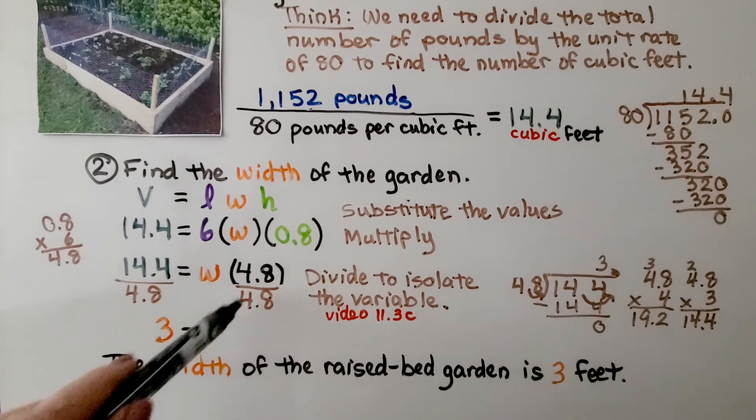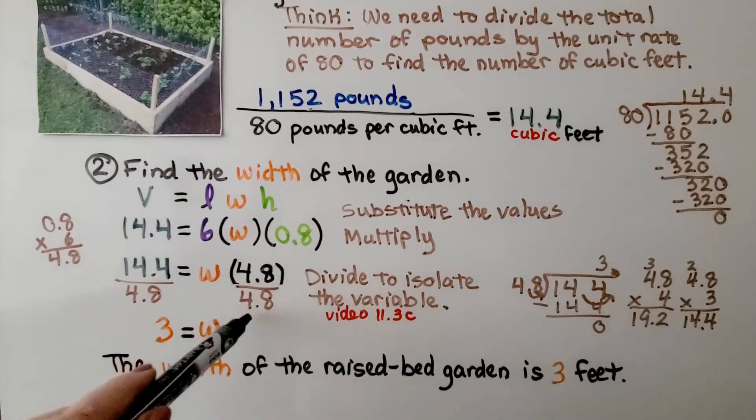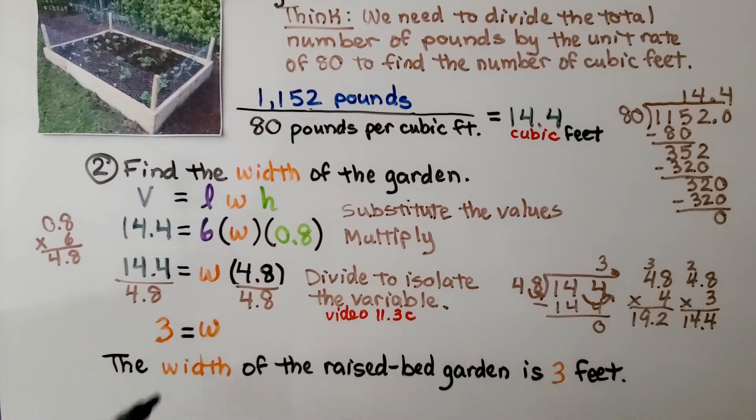And on this side, because we have the same numerator and denominator, we have a 1. So we have one W. We know the width of the raised bed garden is 3 feet.